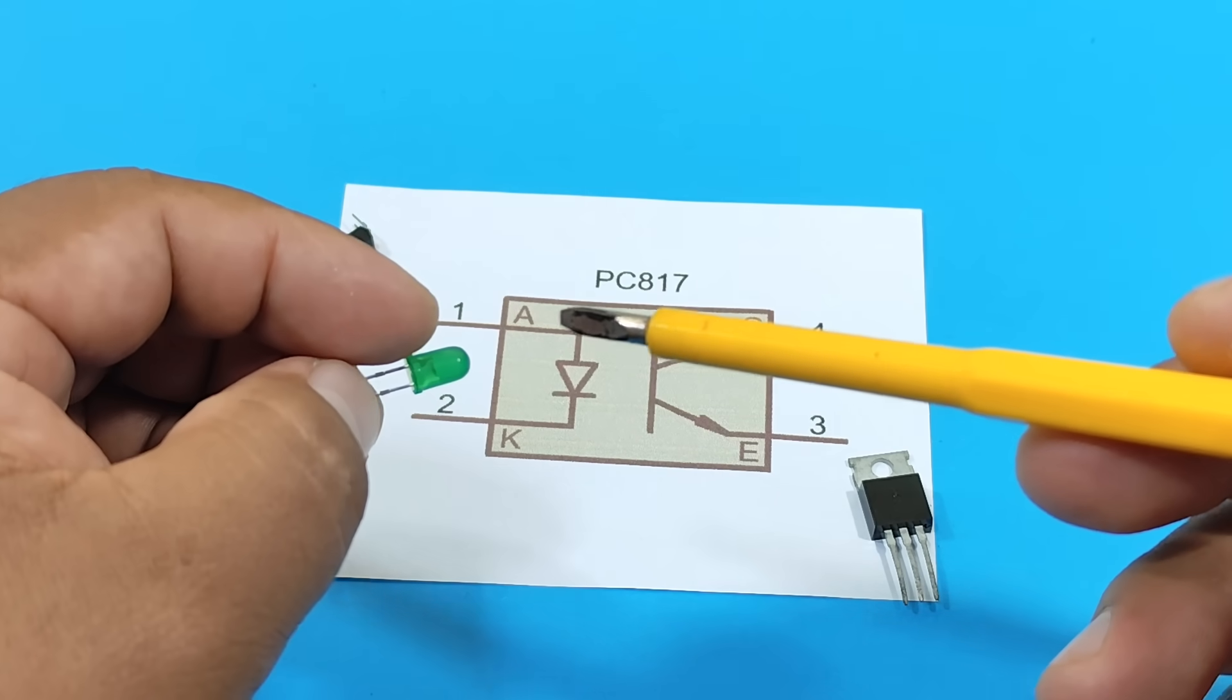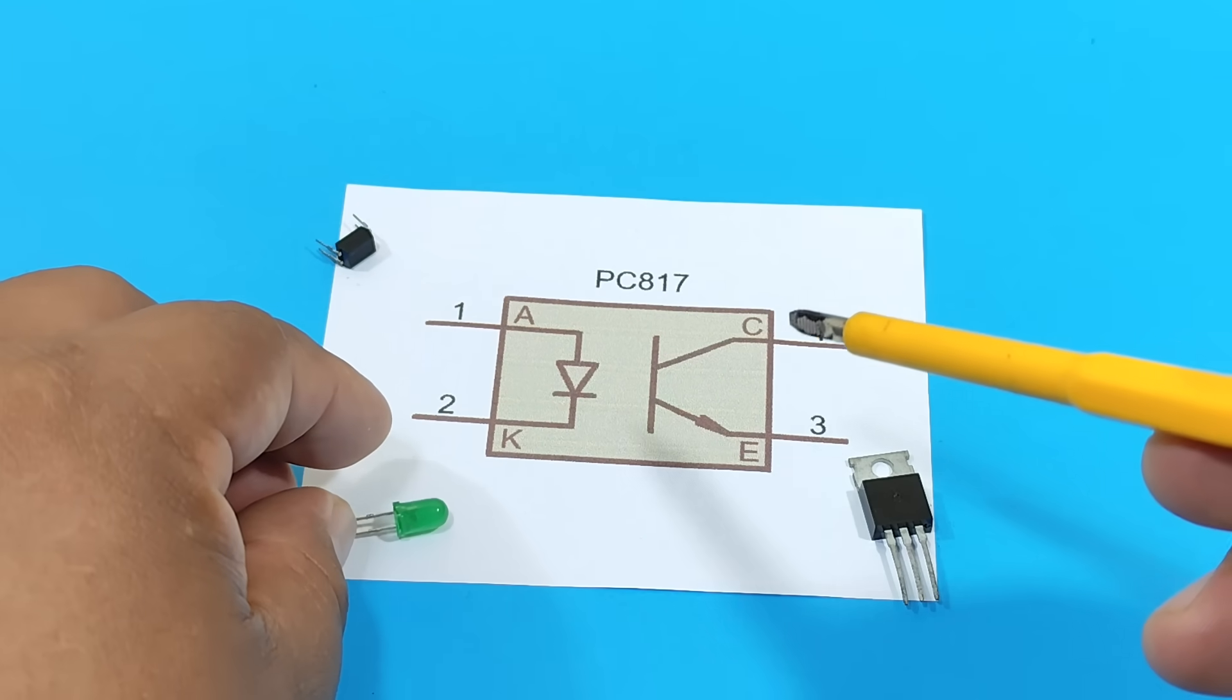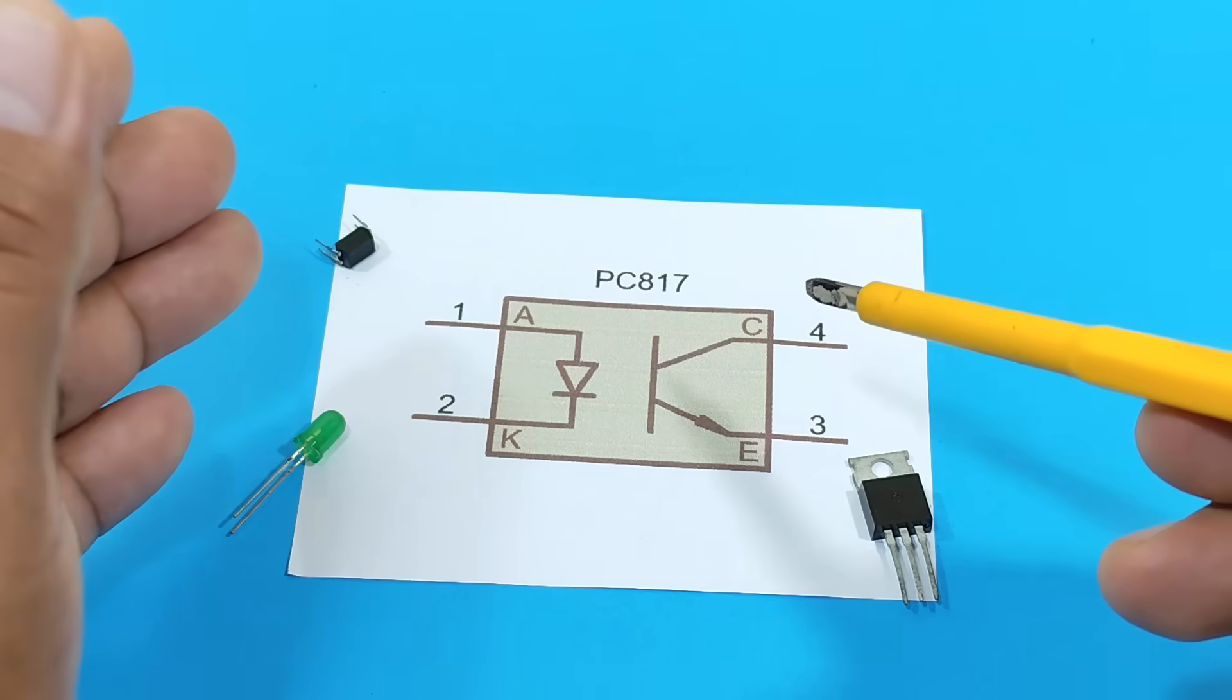This means that the transistor will be activated by the light emitted by this LED. And depending on the amount of light emitted by the LED, this transistor can function as an electronic switch, or as a variable resistor.